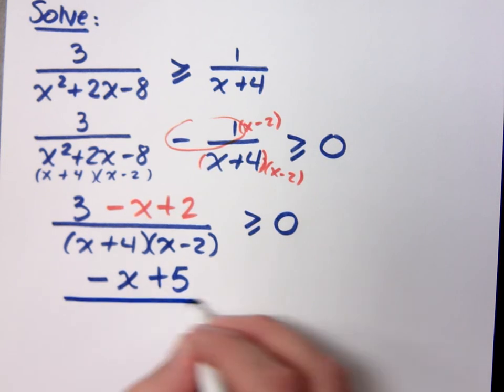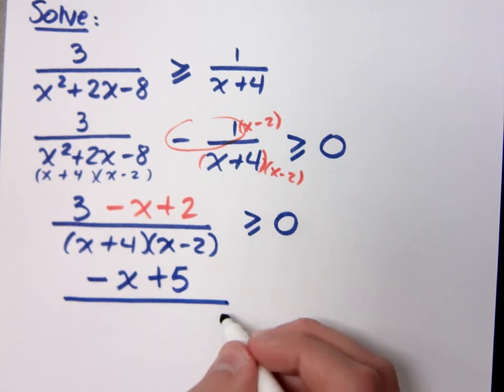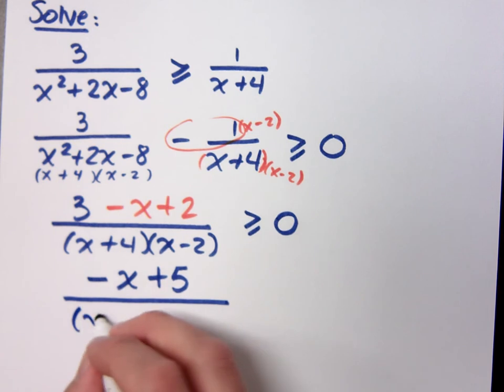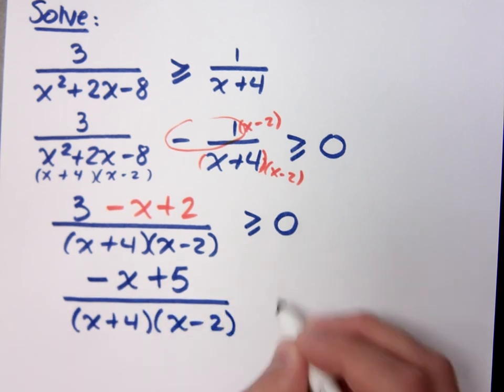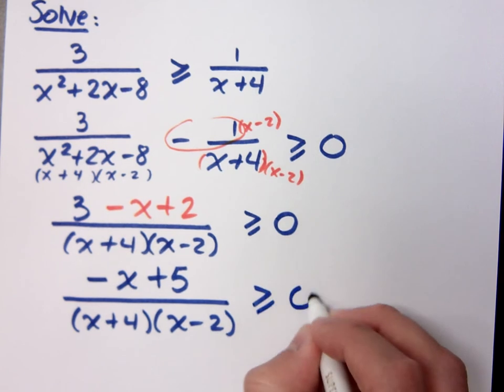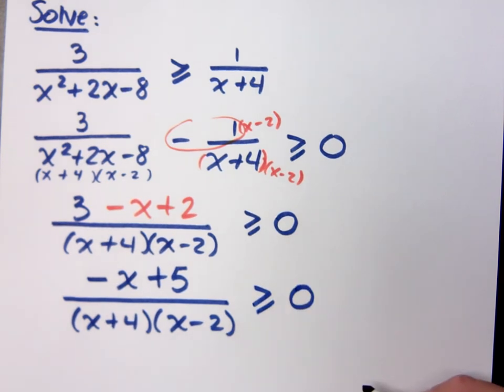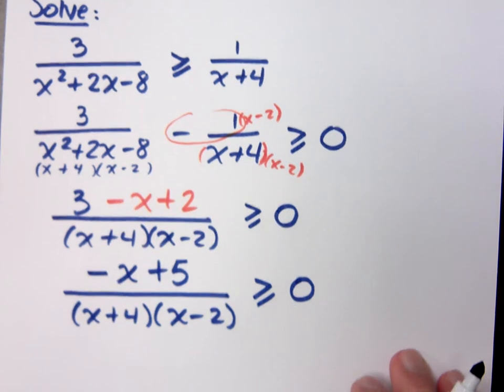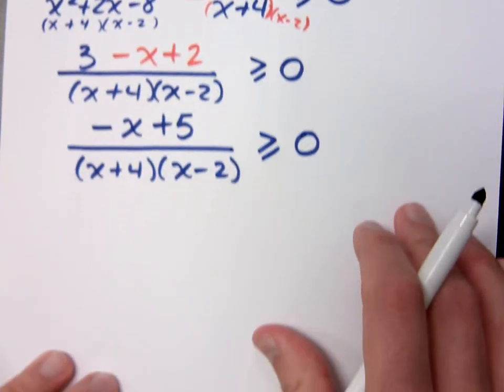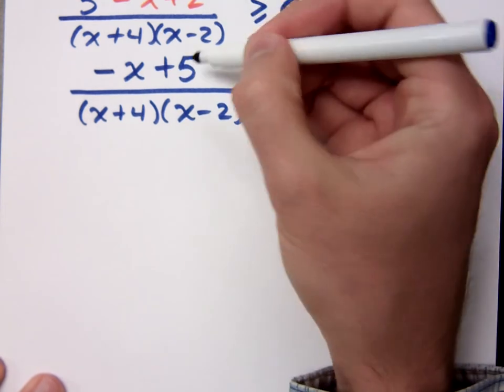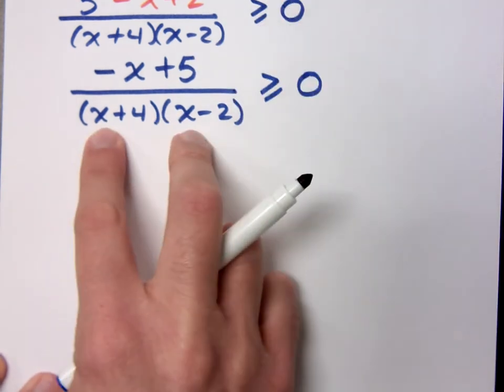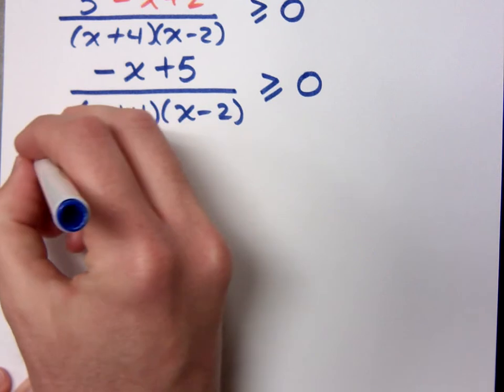When I combine like terms, what do I have? It's negative x plus 5, right? Over x plus 4, x minus 2. Now, we have to be very careful when I go to my sign chart here. But I'm going to help you with that, so it's not going to be a problem.